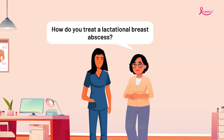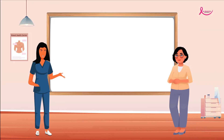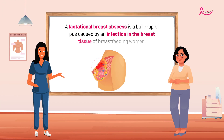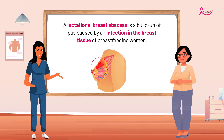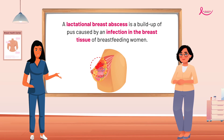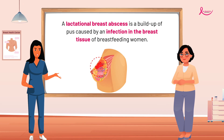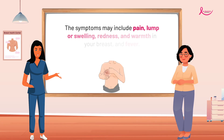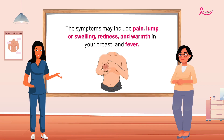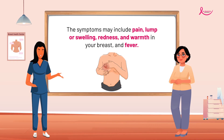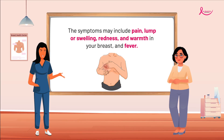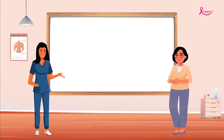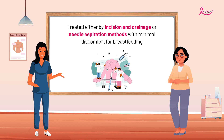How do you treat a lactational breast abscess? A lactational breast abscess is a build-up of pus caused by an infection in the breast tissue of breastfeeding women. The symptoms may include pain, a lump or swelling, redness and warmth in the breast, and fever.